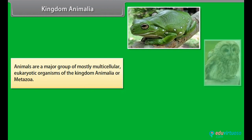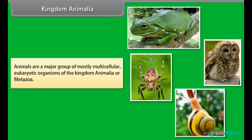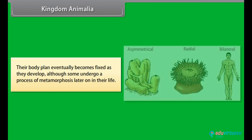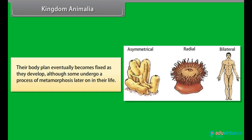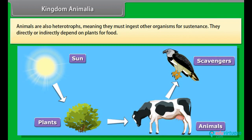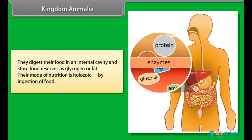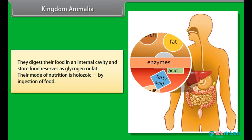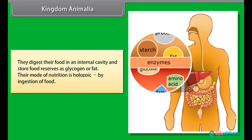Animals are a major group of mostly multicellular eukaryotic organisms of the kingdom Animalia or Metazoa. Their body plan eventually becomes fixed as they develop, although some undergo a process of metamorphosis later in their life. Most animals are motile, meaning they can move spontaneously and independently. Animals are also heterotrophs, meaning they must ingest other organisms for sustenance. They directly or indirectly depend on plants for food. They digest their food in an internal cavity and store food reserves as glycogen or fat. Their mode of nutrition is holozoic, by ingestion of food.